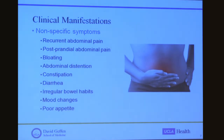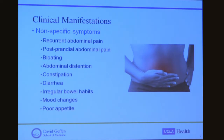There has been a shift over the years from patients presenting with classic celiac symptoms to those who present with atypical symptoms or are completely asymptomatic. The atypical symptoms include recurrent abdominal pain, postprandial abdominal pain, bloating, abdominal distension, constipation, diarrhea, irregular bowel habits, mood changes, and poor appetite. As you can see from the slide, many of these symptoms overlap with those seen in irritable bowel syndrome and uninvestigated dyspepsia.